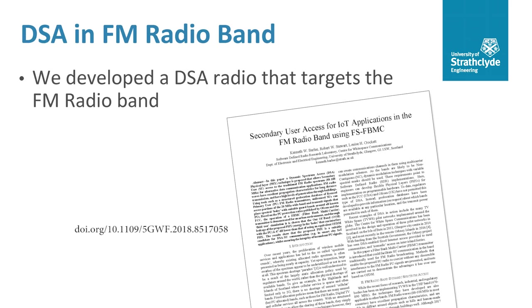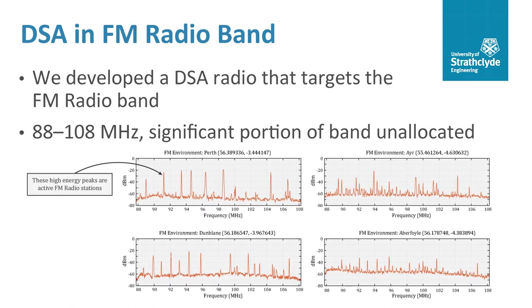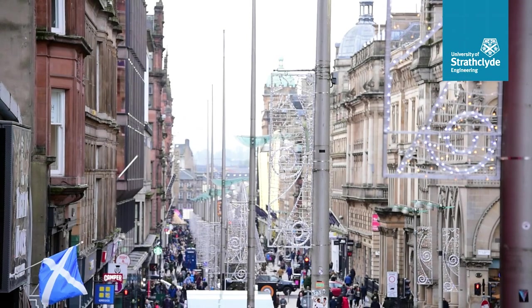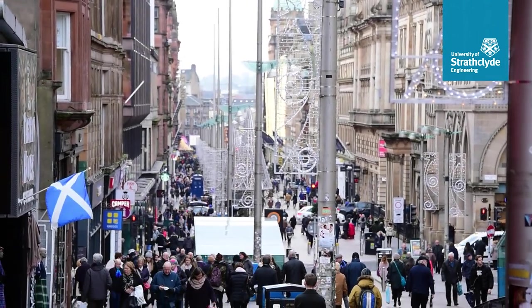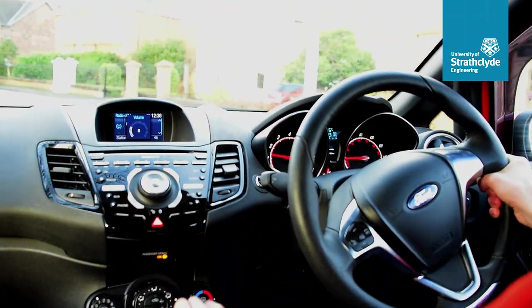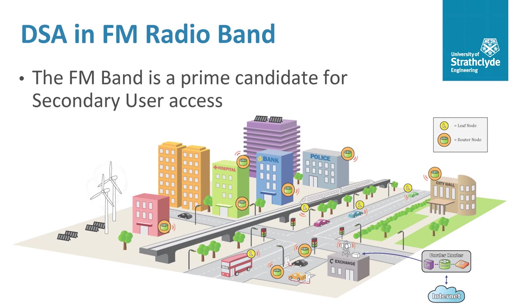In our previous work we developed a DSA radio which targets the FM radio band. The FM band spans between 88 and 108 megahertz and research has shown that a significant portion of the band will often be unallocated at any particular location. Signals broadcast at these frequencies have excellent propagation characteristics compared to the Wi-Fi band, for example — they are able to diffract around objects such as hills and human-made structures and have high levels of penetration through buildings. For these reasons, the FM radio band should be considered a prime candidate for secondary user access for applications such as a citywide IoT network.